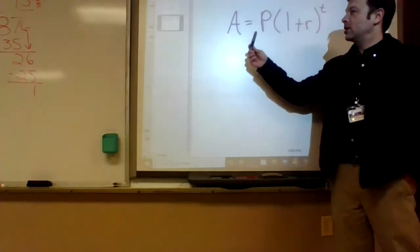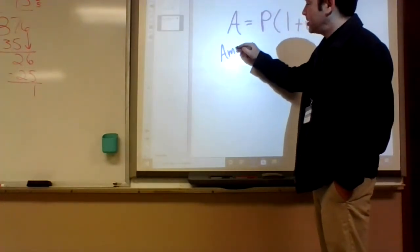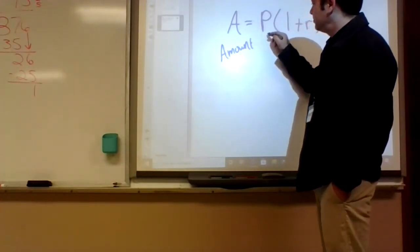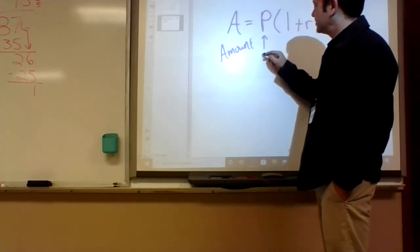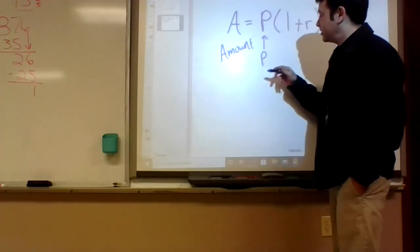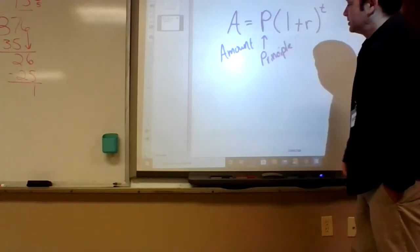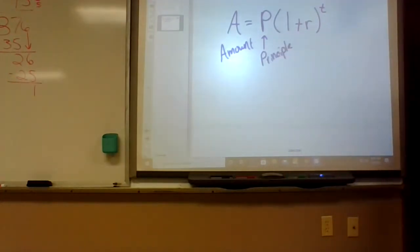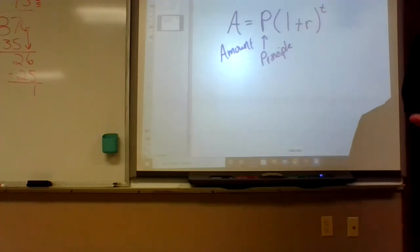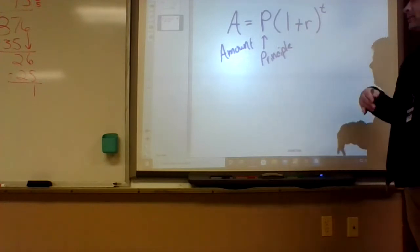Let's figure out what these letters stand for. A stands for amount. P stands for principal — not your school principal, but the initial investment or the initial amount that you borrowed, or the initial amount the bank invested in you.